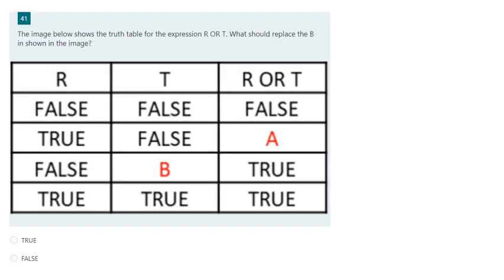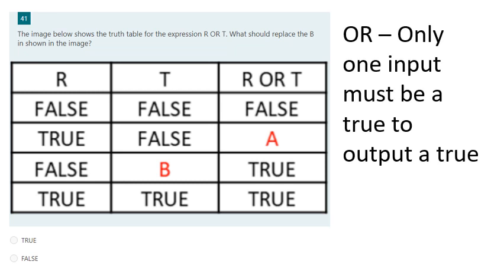Now looking at B. The output for R OR T is true, so we need at least one input to be true to output true. Looking at R — that's false. So T must be true, because the output is true.